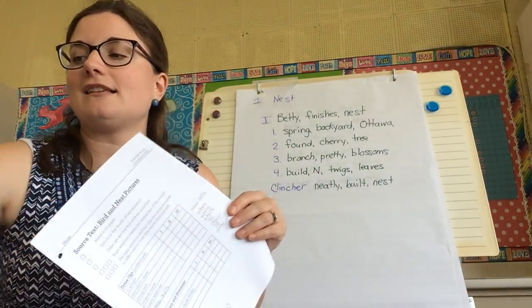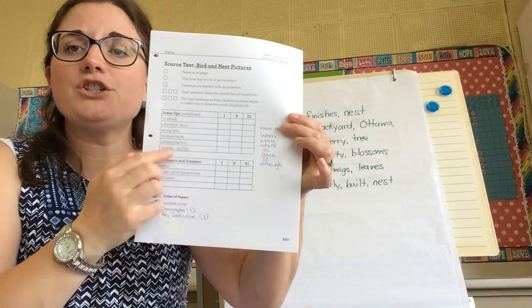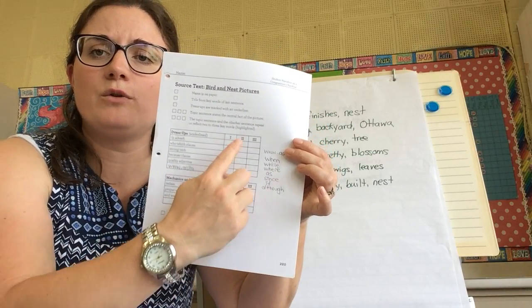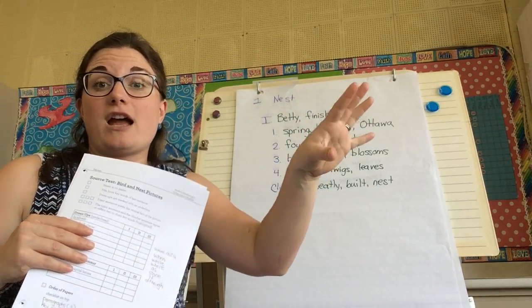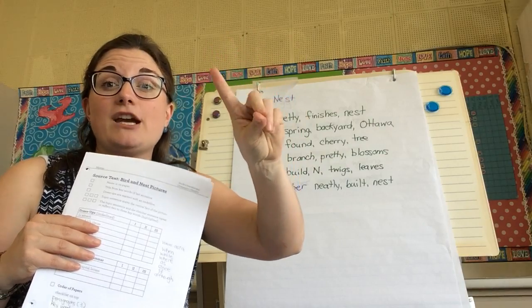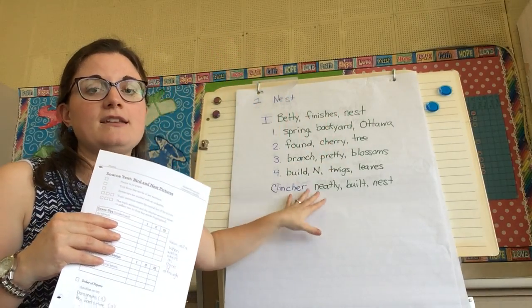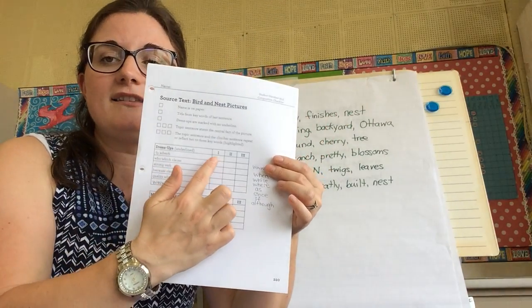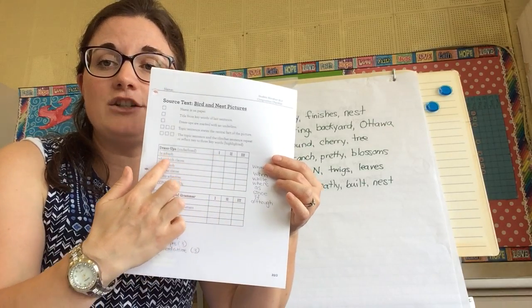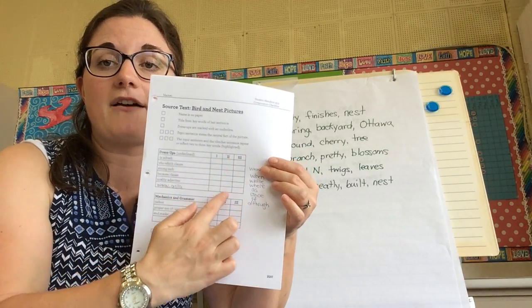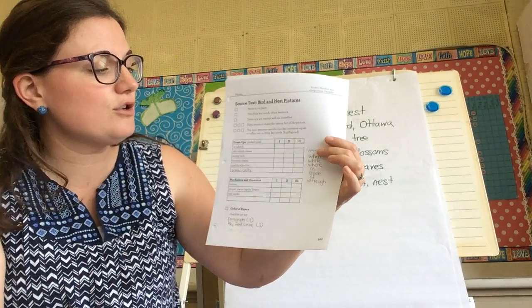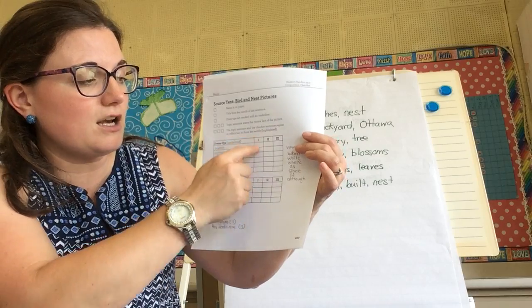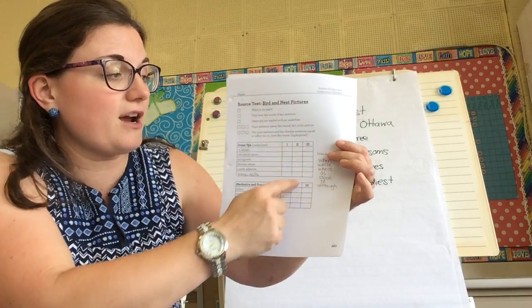Now I want to explain the checklist here because you'll notice there's a roman numeral one, two, and three and that's because for each outline we're going to make a paragraph. So at the end you'll have three paragraphs. Today we're just doing the first one. So on our checklist you have to have all each of our dress ups in each paragraph. So we're going to do all the dress ups today in our first paragraph.